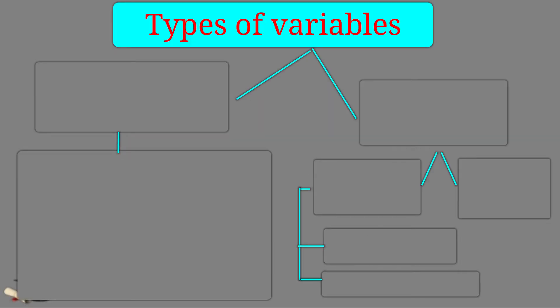Now, types of variables. Variables can be divided into different types on various grounds. One, we can describe the types of variable on the basis of variation or change they bring. Two, we can explain the different types of variables on the basis of measurement.